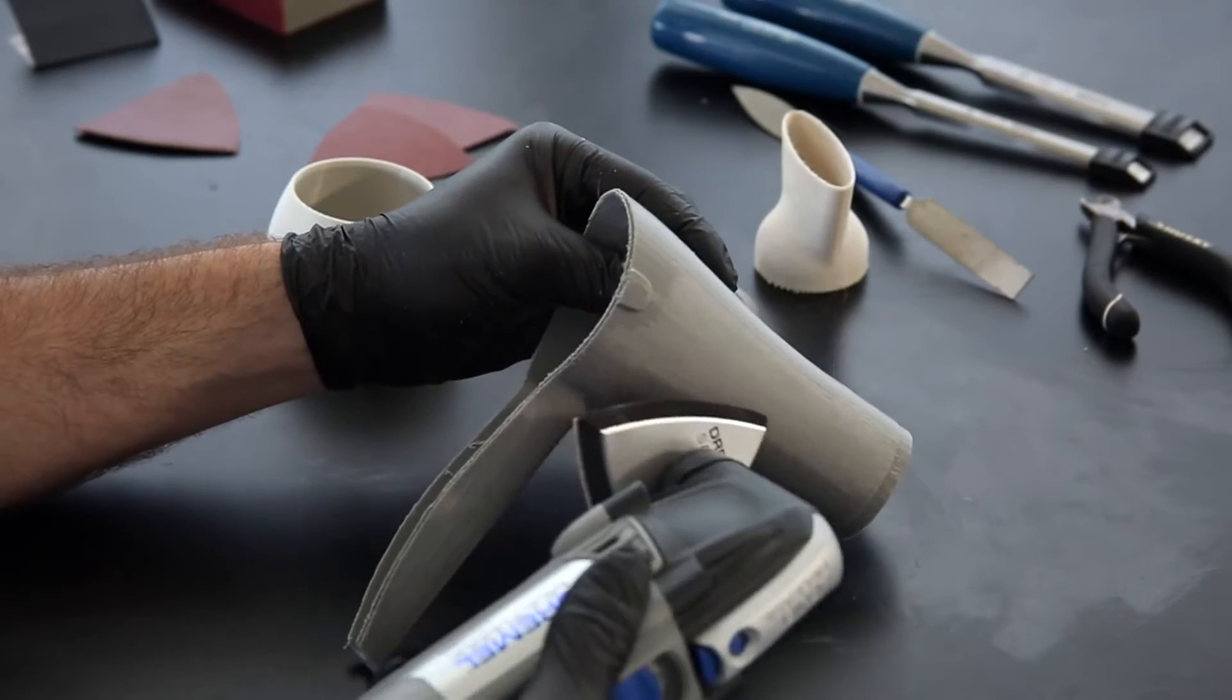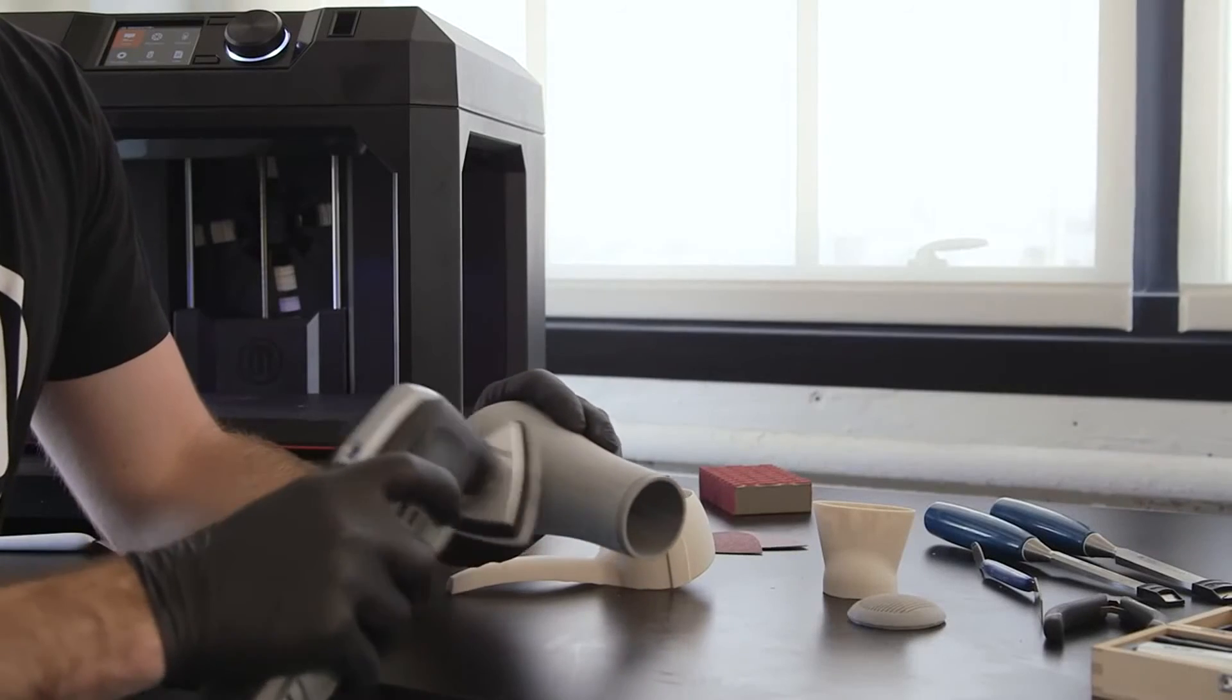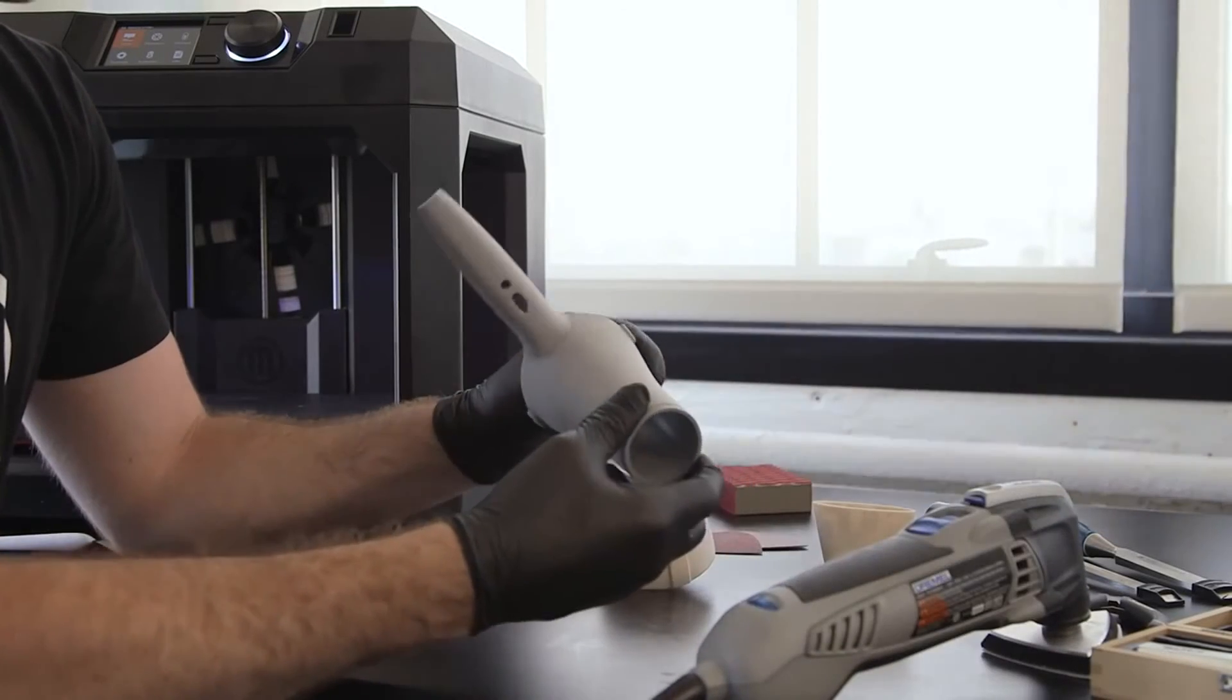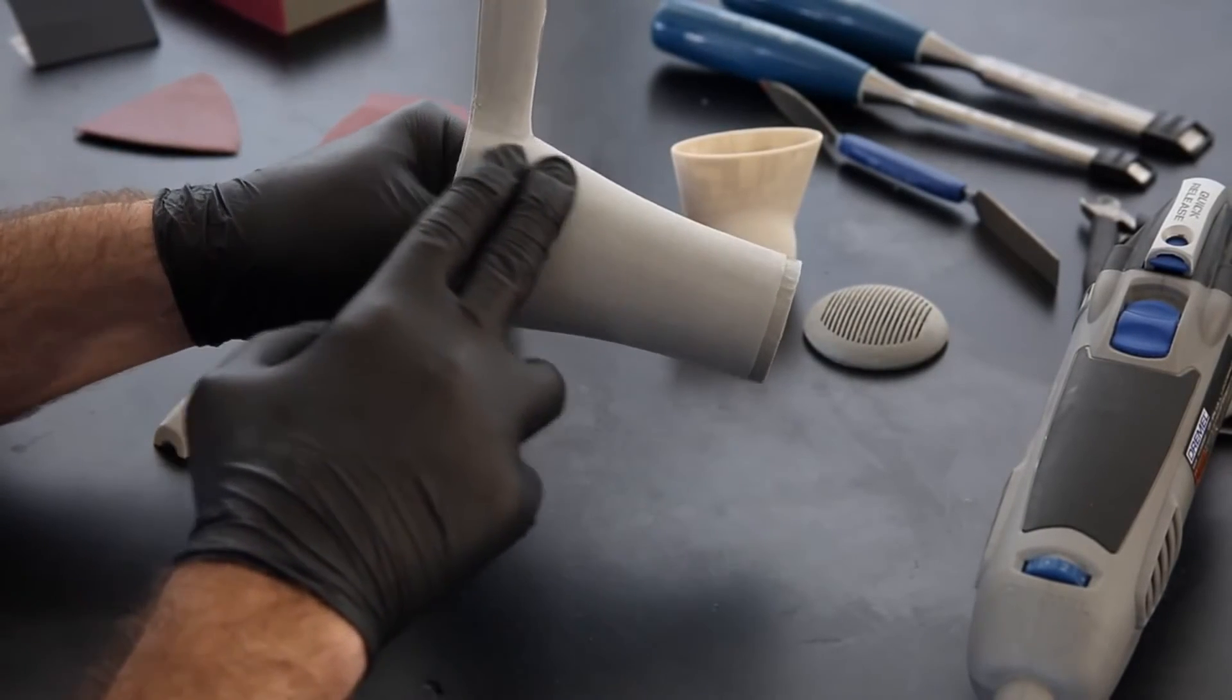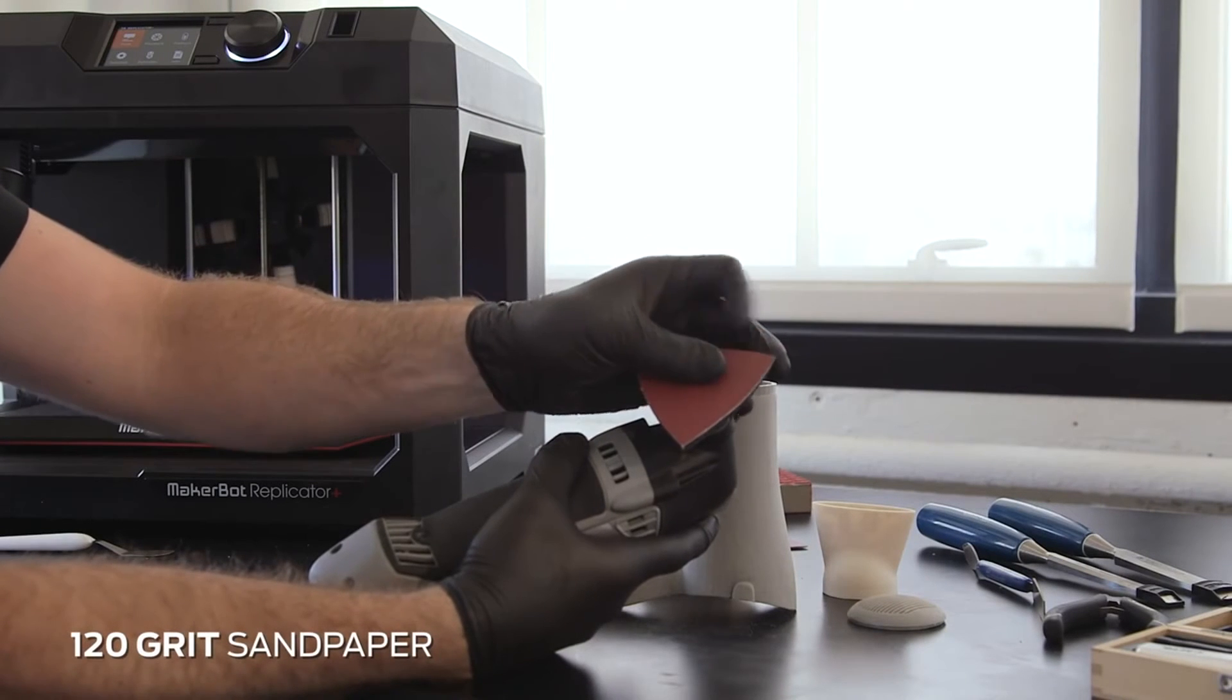Clean and inspect your print under good lighting. If you missed any spots, sand and inspect again. You can move to the next grit when you notice that your model's surface is fairly even and has changed from glossy to matte. When you approach higher polishing grits, the shine will return.